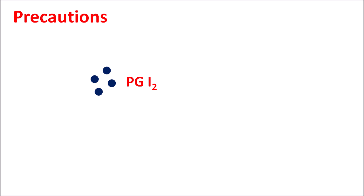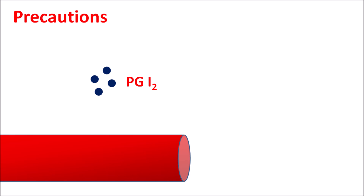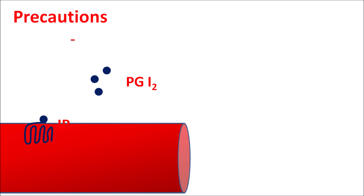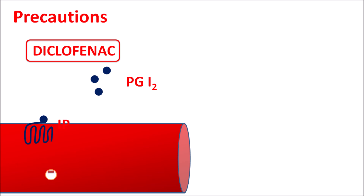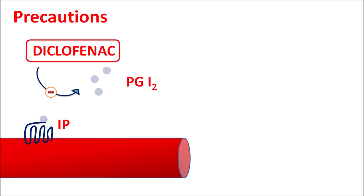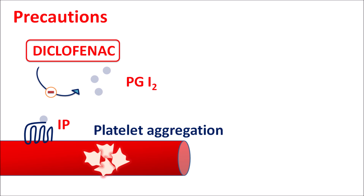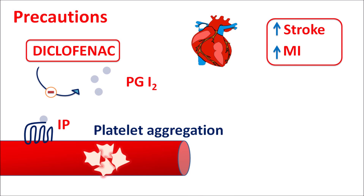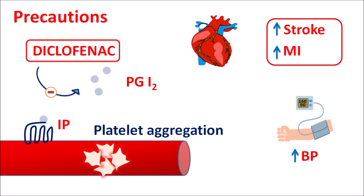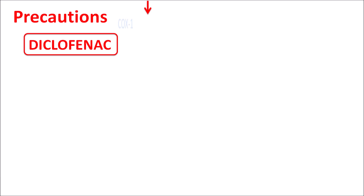Regarding cardiovascular precautions: PGI2 acts on IP receptors in blood vessels to produce vasodilation. In the presence of diclofenac, PGI2 synthesis is inhibited, resulting in vasoconstriction. This vasoconstriction may lead to platelet aggregation, increasing the risk of stroke and myocardial infarction. It can also increase hypertension. Therefore, patients with pre-existing hypertension or cardiovascular disorders should be given diclofenac carefully.